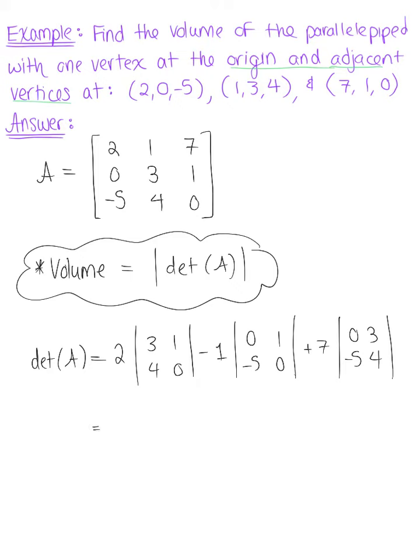And so computing these 2 by 2 determinants, we have 2 multiplied by 0 minus 4, minus 0 minus negative 5 so plus 5, plus 7 multiplied by 0 minus negative 15 so plus 15.